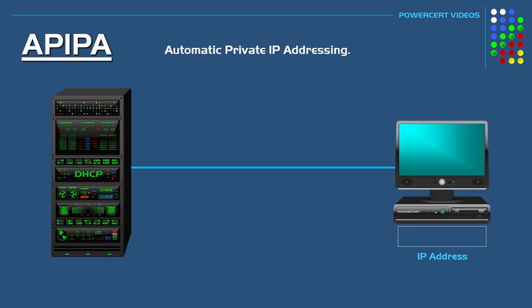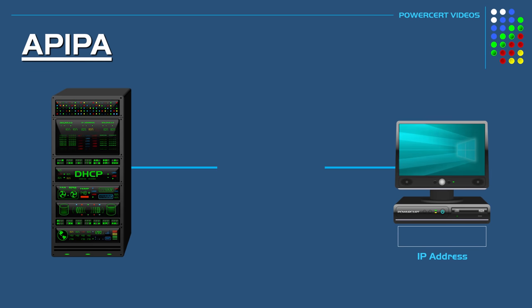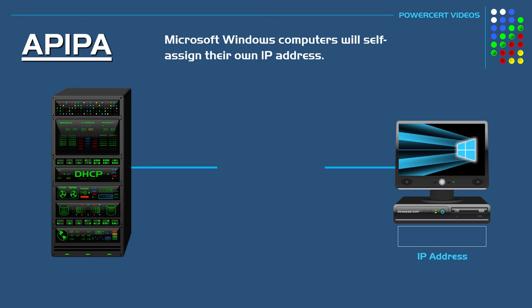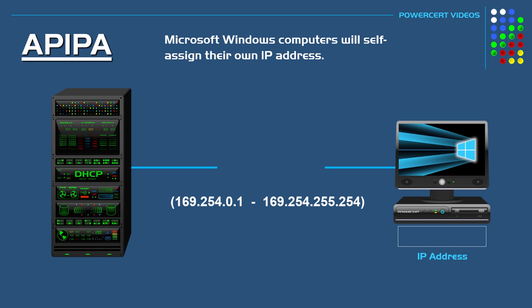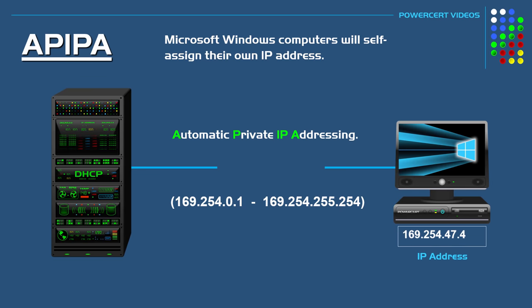For example, what happens if a DHCP server goes down or if the communication to the server is lost? If this happens, computers running Microsoft Windows will self-assign their own IP address. These IP addresses will be in the range starting with 169.254.0.1. This type of self-assigned IP addressing is what's called Automatic Private IP Addressing.